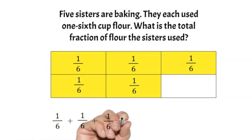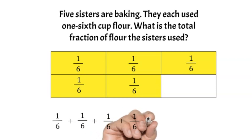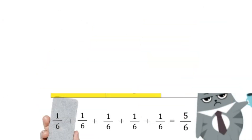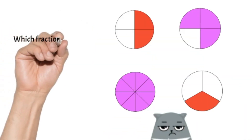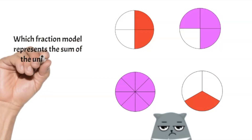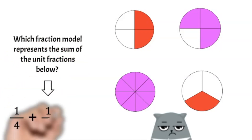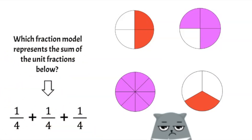To solve, we'll add together the parts: one-sixth plus one-sixth plus one-sixth plus one-sixth plus one-sixth equals five-sixths. They used five-sixths cup of flour.